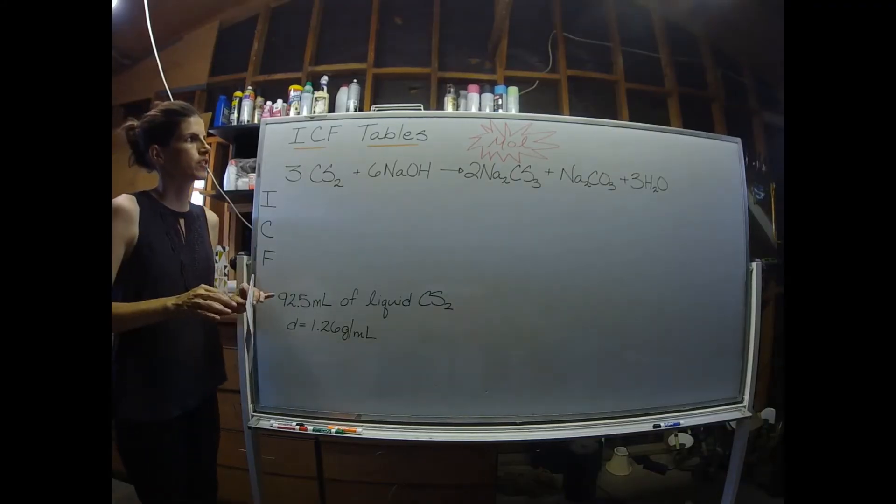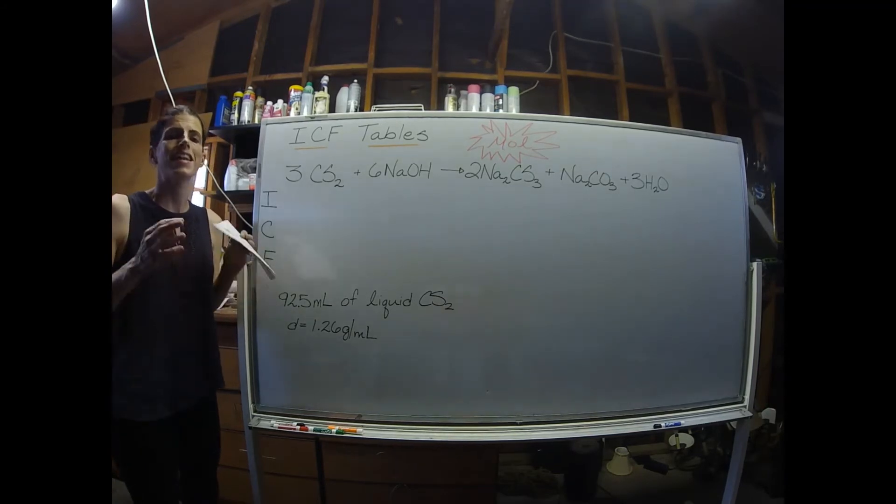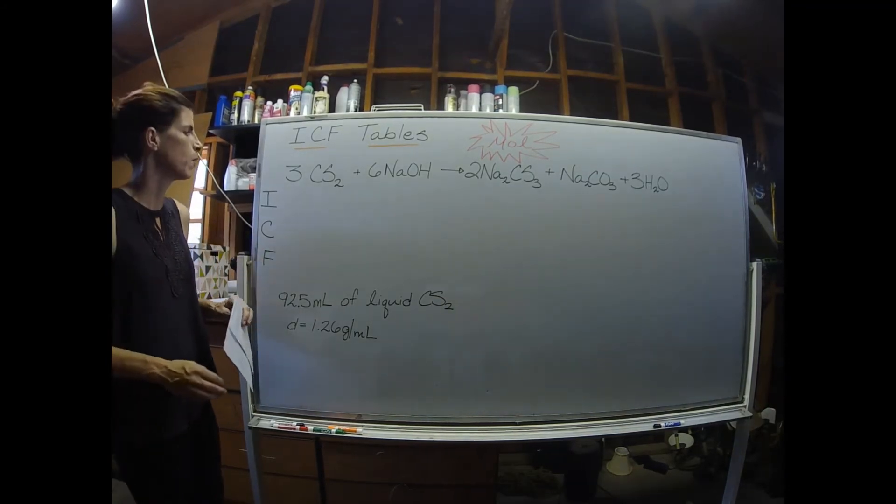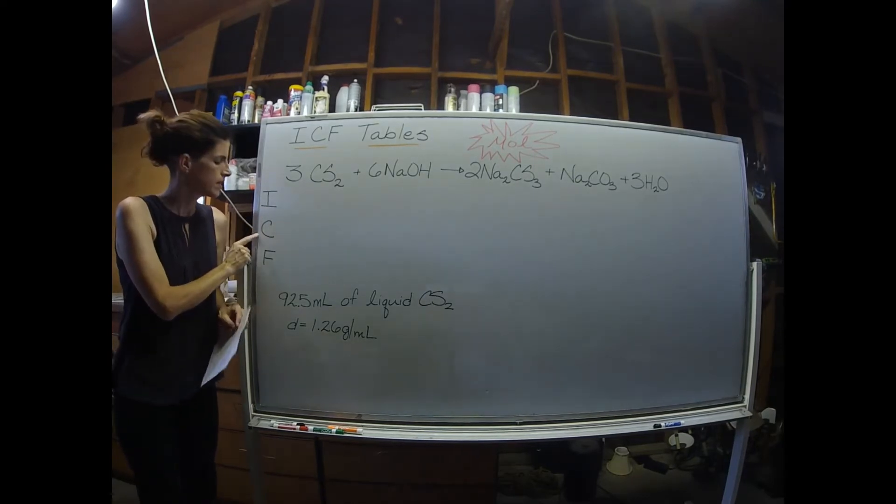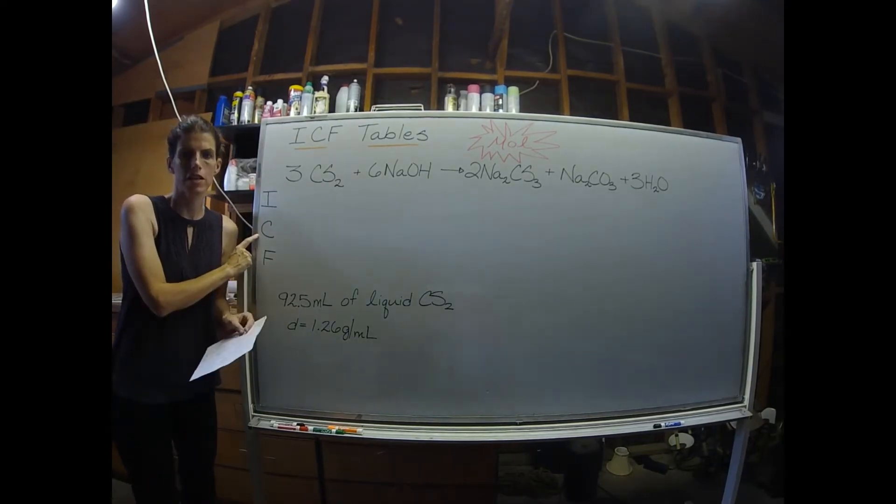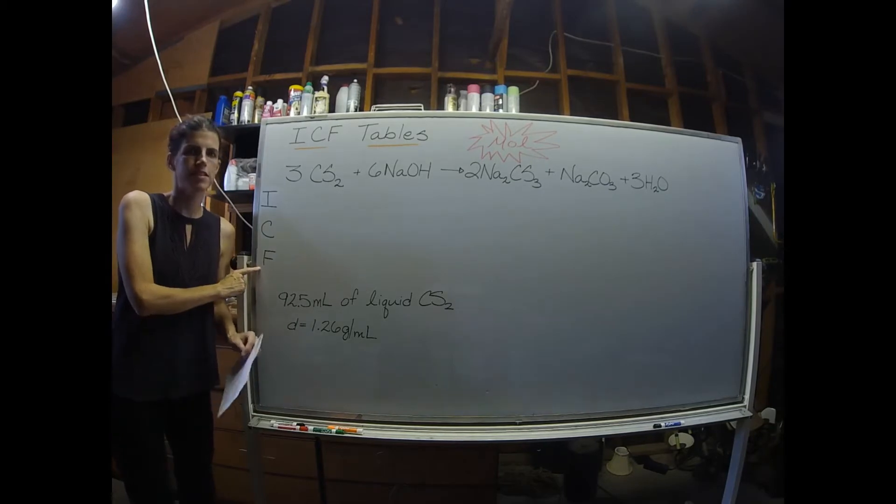Today we're going to start discussing what's known as an ICE table. I stands for initial, C stands for change, and F stands for final.